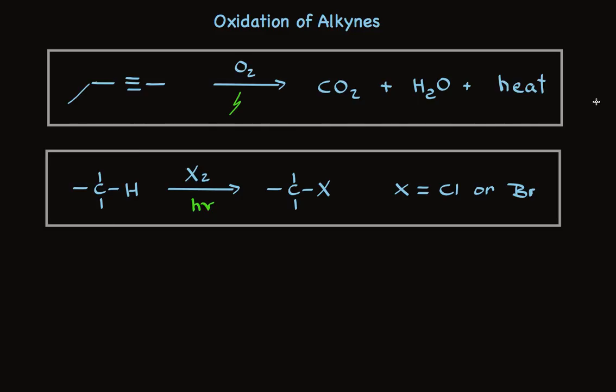We can say the same kind of thing about alkyne chemistry. Alkynes, like alkenes and alkanes, undergo combustion and halogenation when they have CH bonds that can be replaced to make carbon-halogen bonds. The halogen can be chlorine or bromine. Again, these are radical processes. They create carbon-heteroatom bonds in place of carbon-hydrogen bonds, which is our definition of oxidation.